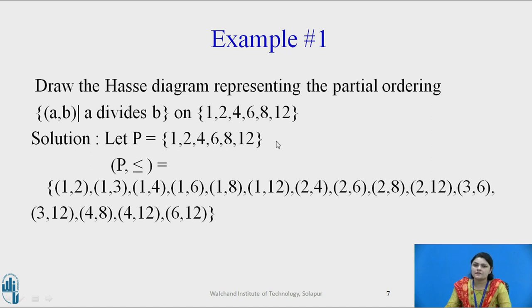Now here we see the partial order relation is less than or equals to. It means the x element are less than or equal to y elements and the condition is a divides b. It means x divides y. So the relation is less than and equals to.